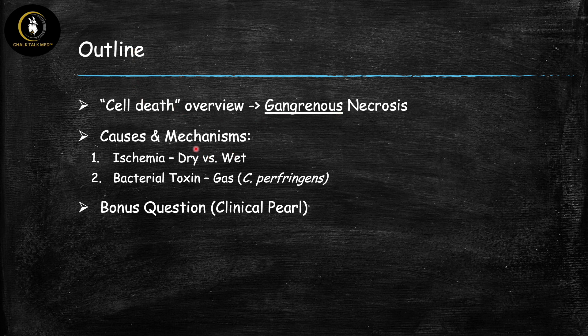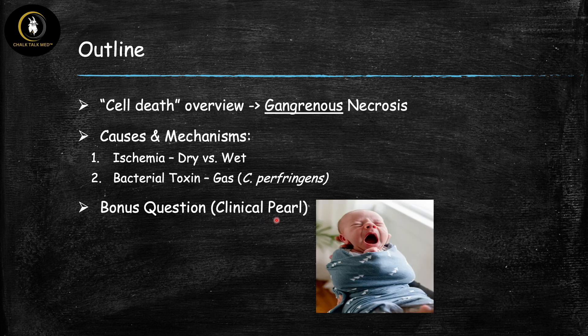Then we're going to talk about the causes and mechanisms, and there are two main types: ischemia and gangrene induced by a bacterial toxin. We'll go through all this and then wrap up with a bonus question about a clinical pearl — just a little teaser, it's going to be about a crying baby.